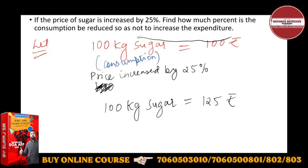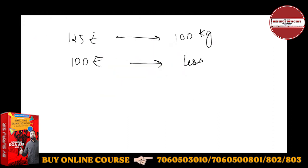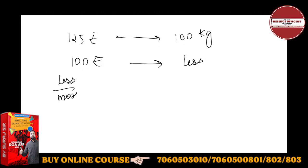So what I'm asking is: how can you reduce consumption? With 100 rupees, how much can you get now? Apply the formula: less by more, into individual value.